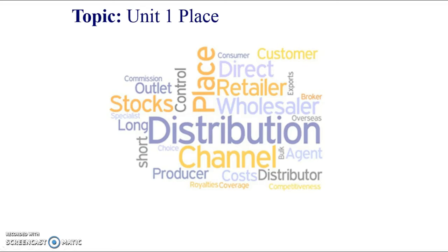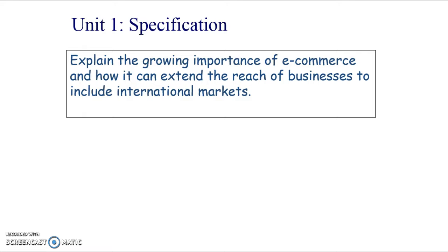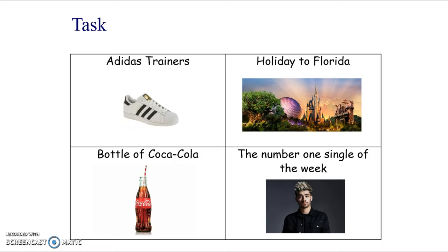The last section of the marketing mix is Place for Unit 1. In the specification, it just says to understand or explain the growing importance of e-commerce, but the textbook gives some details about place and channels of distribution. That's more of a Unit 2 topic, but it's a good time to learn it alongside Unit 1, so I'm going to go through both.